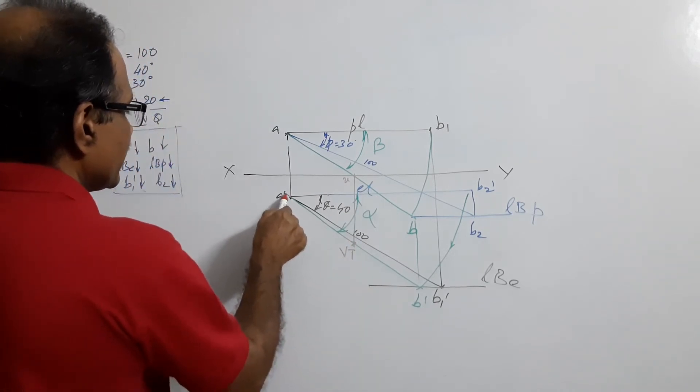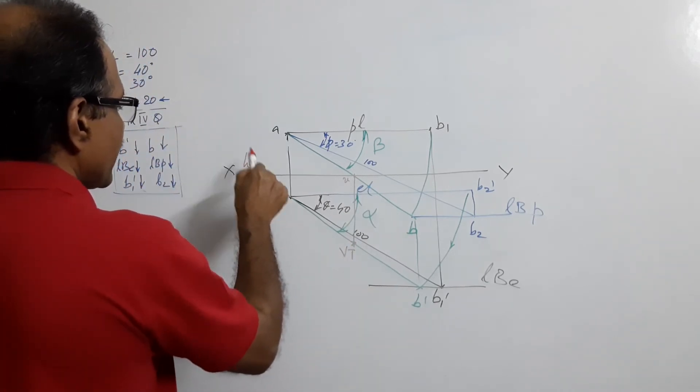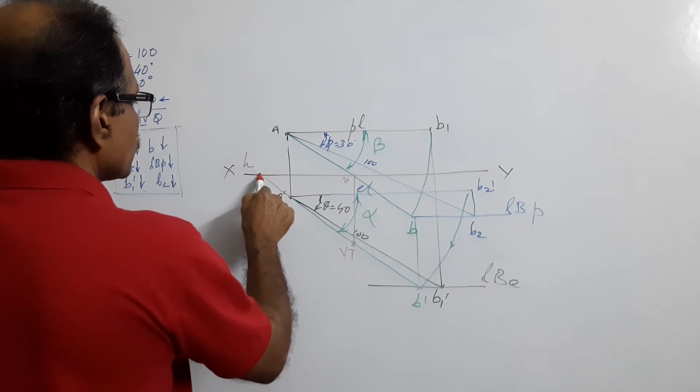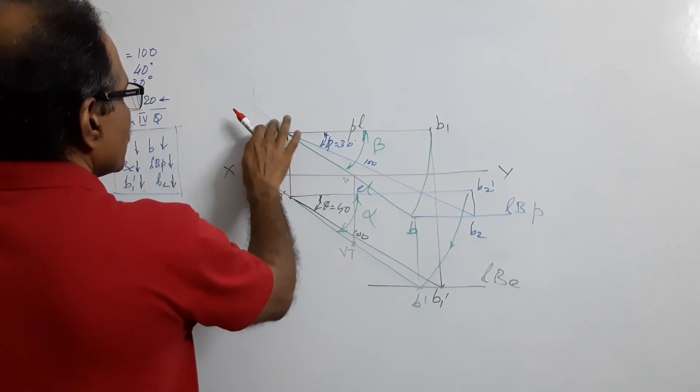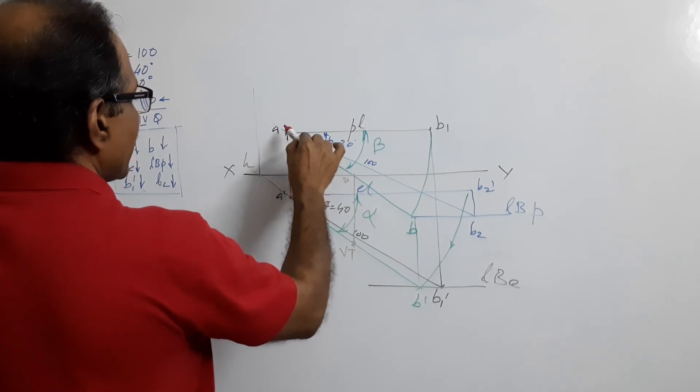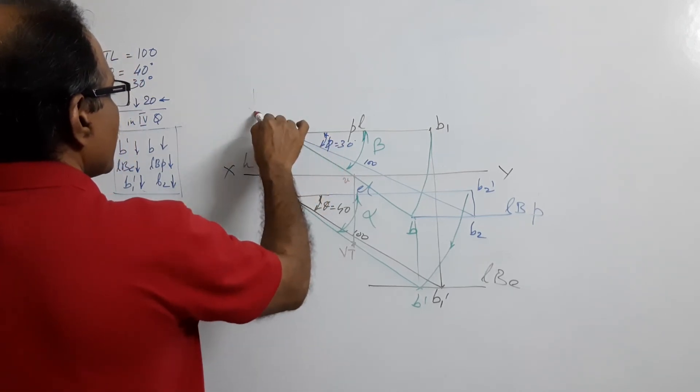VT elevation when extended will cut XY at H. Draw a vertical through H. It will cut the extension of the plan at HT.